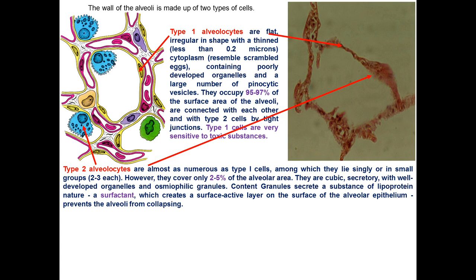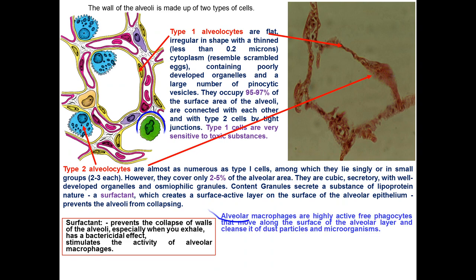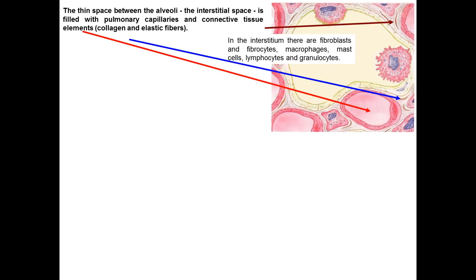Type 1 alveolar cells occupy 95 to 97 percent of the surface area of alveoli and are very sensitive to toxic substances. Type 2 alveolar cells, in spite of covering only 2 to 5 percent of the alveolar area, produce a very important substance called surfactant. Surfactant prevents the collapse of alveolar walls especially when you exhale, has bactericidal effects, and stimulates the activity of alveolar macrophages.